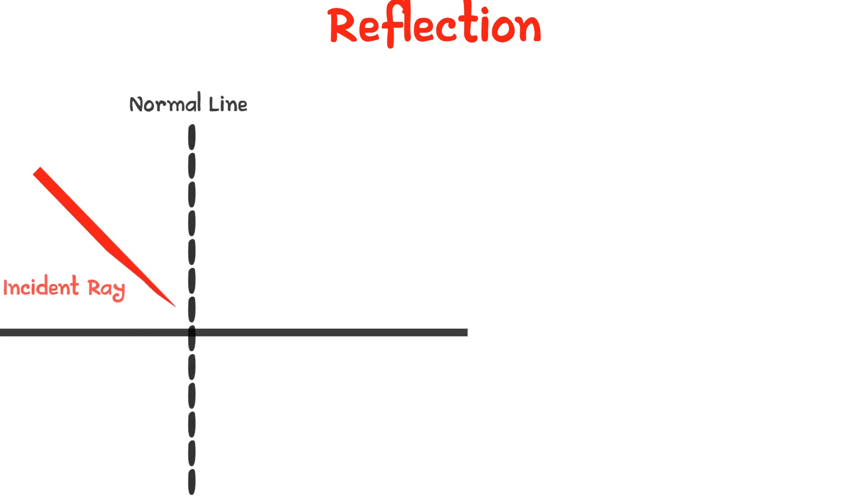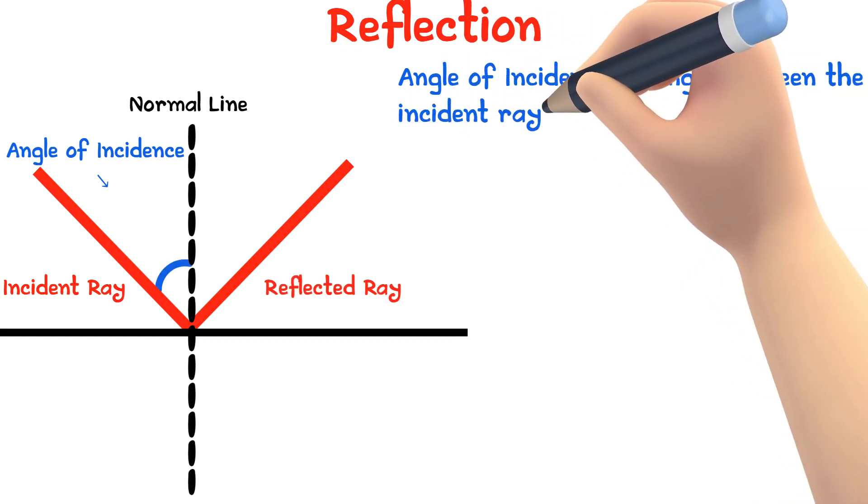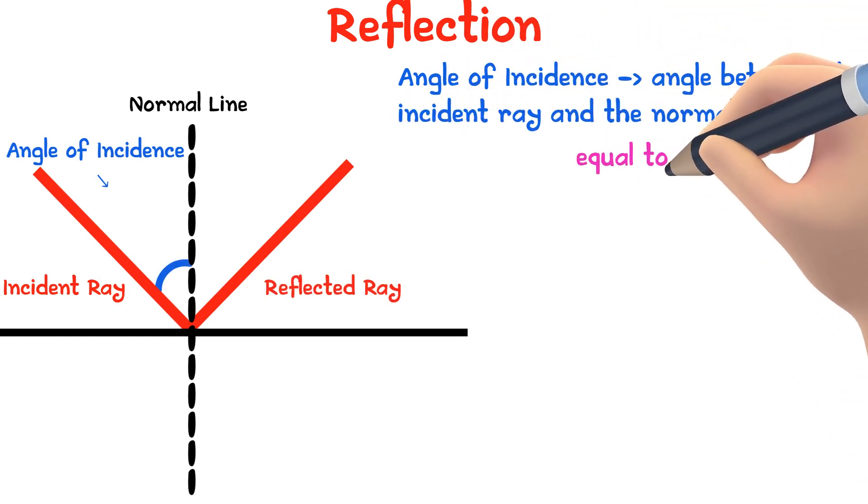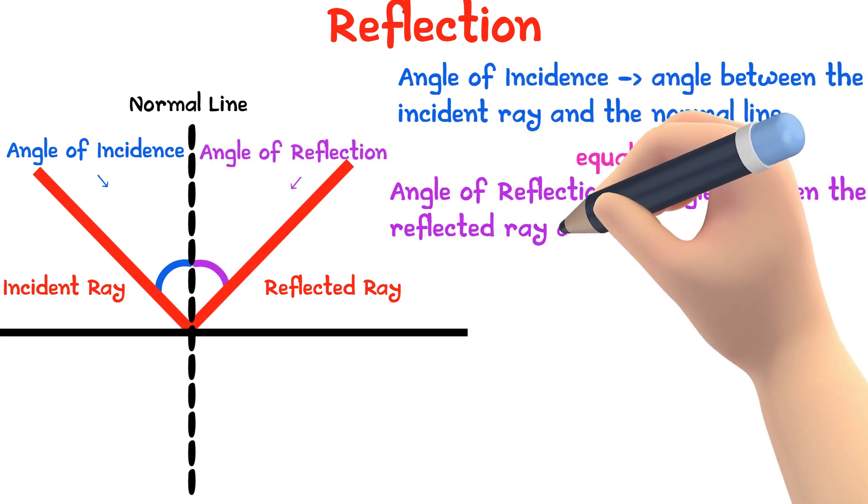When a light ray strikes a flat surface, it is reflected so that the angle of incidence, which is the angle between the incident ray and the normal line, is equal to the angle of reflection, which is the angle between the reflected ray and the normal line.